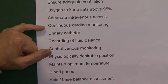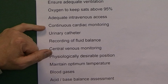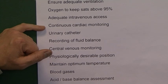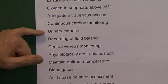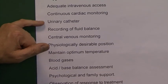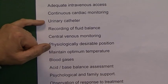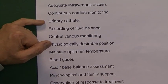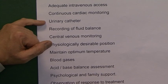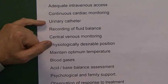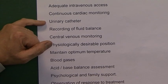Continuous cardiac monitoring will tell us what the heart rhythm is doing in case the patient goes into any dysrhythmias — any abnormal heart rhythms. Urinary catheters will normally be installed so we can measure hourly volumes of urine and get an idea of how well the kidneys are being perfused.